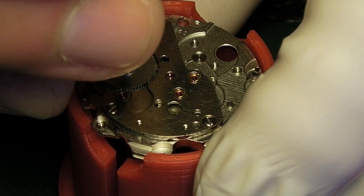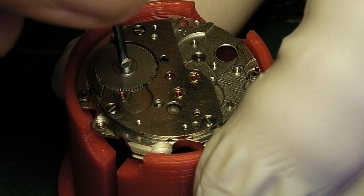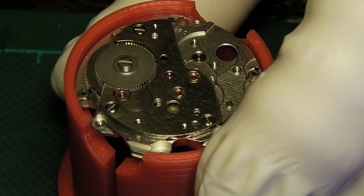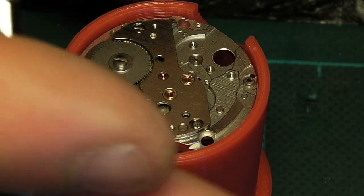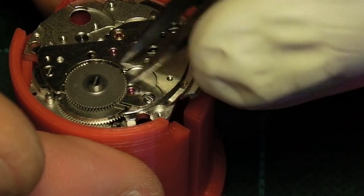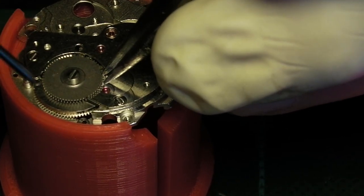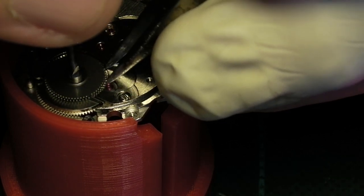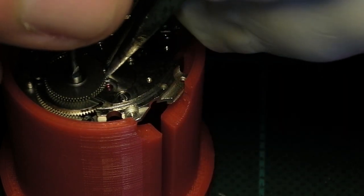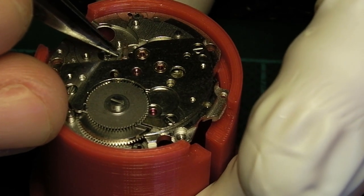The ratchet wheel, washer, and barrel arbor screw are then refitted. That's tightened by holding the ratchet wheel in place with a pair of tweezers while nipping that up.